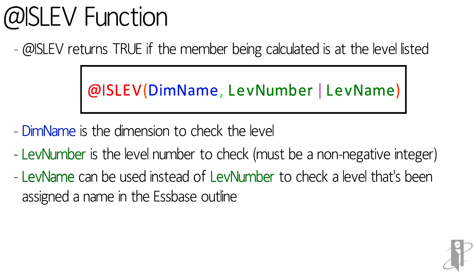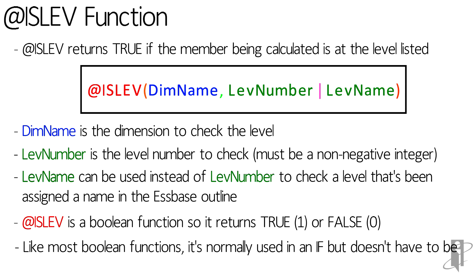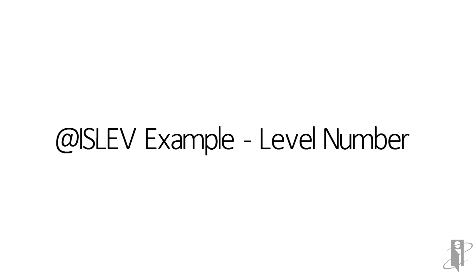Lev name can be used instead of lev number, as long as that level has been assigned a name in the Essbase outline. Remember, ISLEV is a boolean function, so it returns one for true or zero for false. Like most boolean functions, it's normally used in an if statement, but it doesn't have to be.